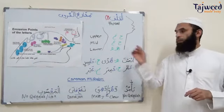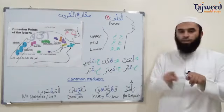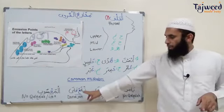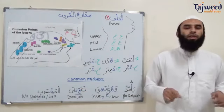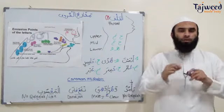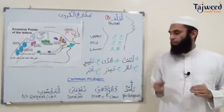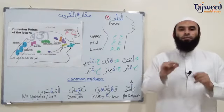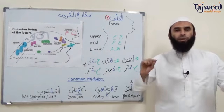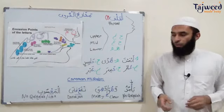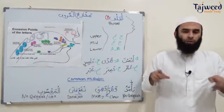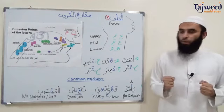When two letters from the throat letters are next to each other — two of the same letters — we have to be careful that they're not joining together. For example, 'fihihuda': two ha's — fihihuda. We have to make sure they're pronounced clearly and not joined together, which is very common.